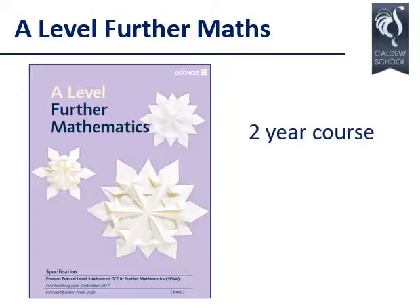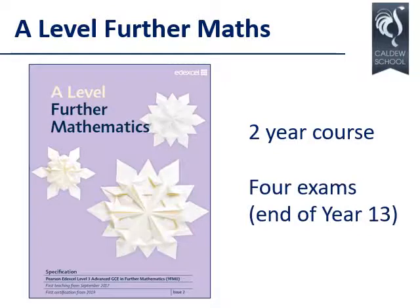Further maths A-level is a two-year course. We follow the Edexcel specification. The A-level course is examined at the end of year 13. There are four exams: two pure maths papers and one each for statistics and mechanics. Each exam is one hour 30 minutes and there is no coursework.